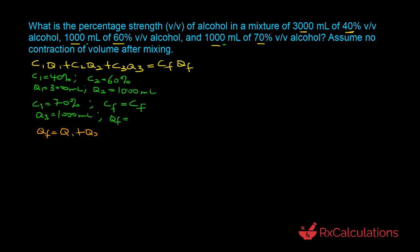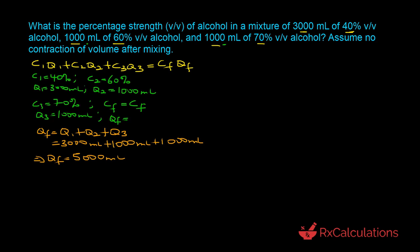The way we determine Qf is that Qf = Q1 + Q2 + Q3. From a physical standpoint, you are mixing all three components together, and since we assume no contraction of volume, the final quantity is the sum of the individual components. Substituting the values: Qf = 3000 mL + 1000 mL + 1000 mL, which means Qf = 5000 milliliters.